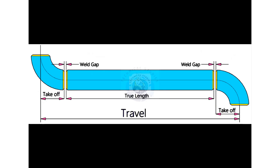How we will calculate the true length of the spool: the true length or the cut length is — add 2 welding gaps and 2 take offs, then minus this sum from the travel.